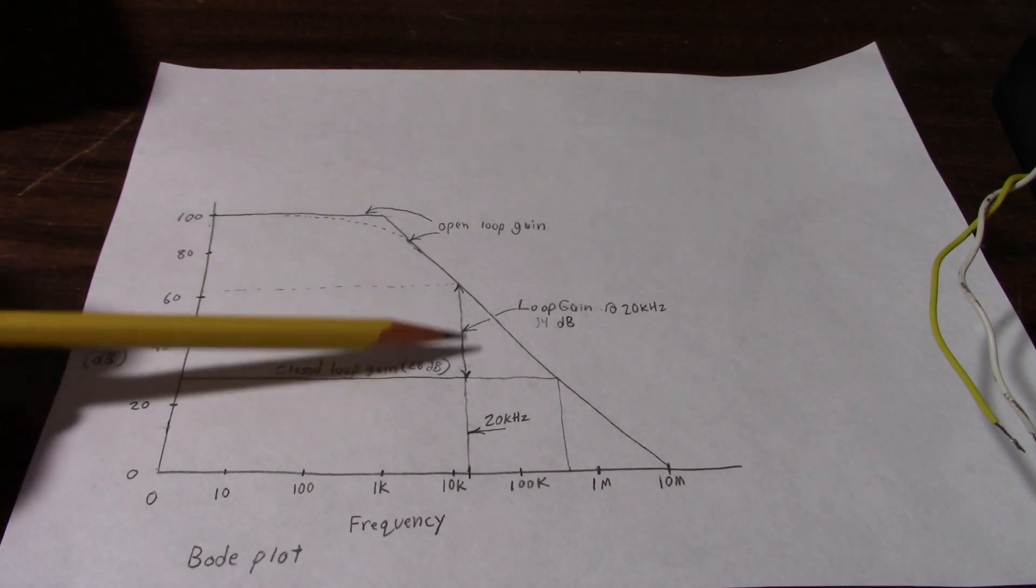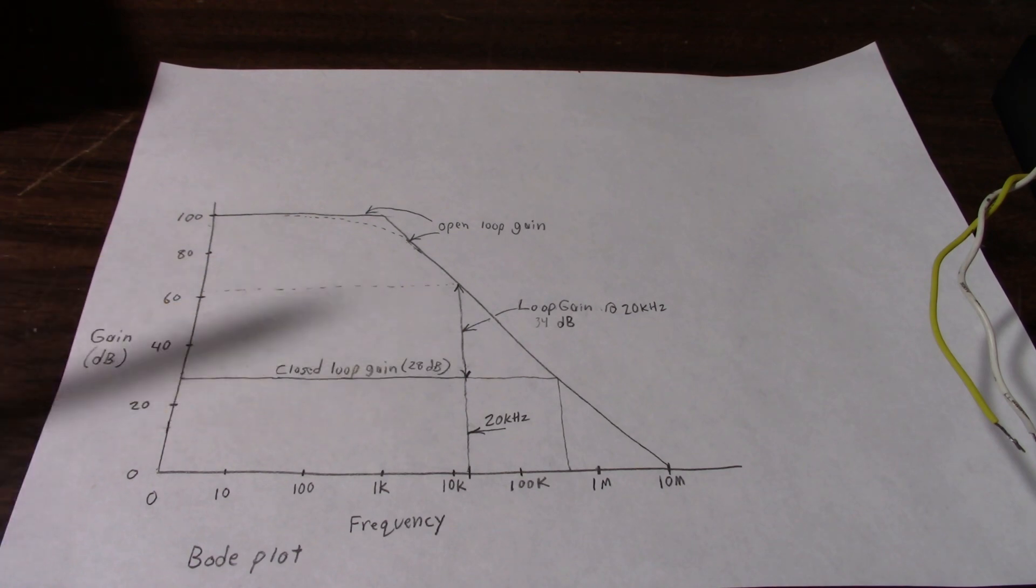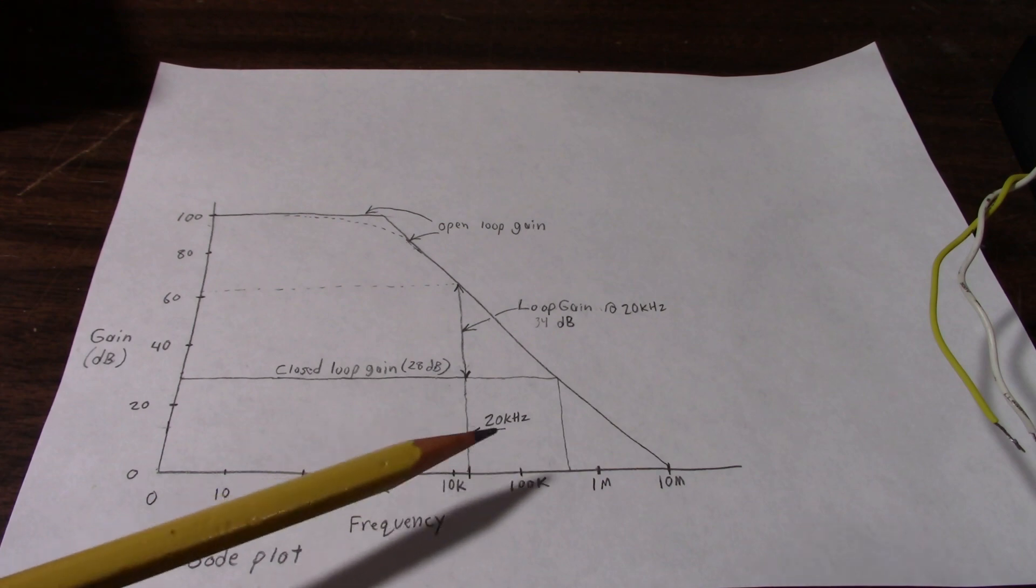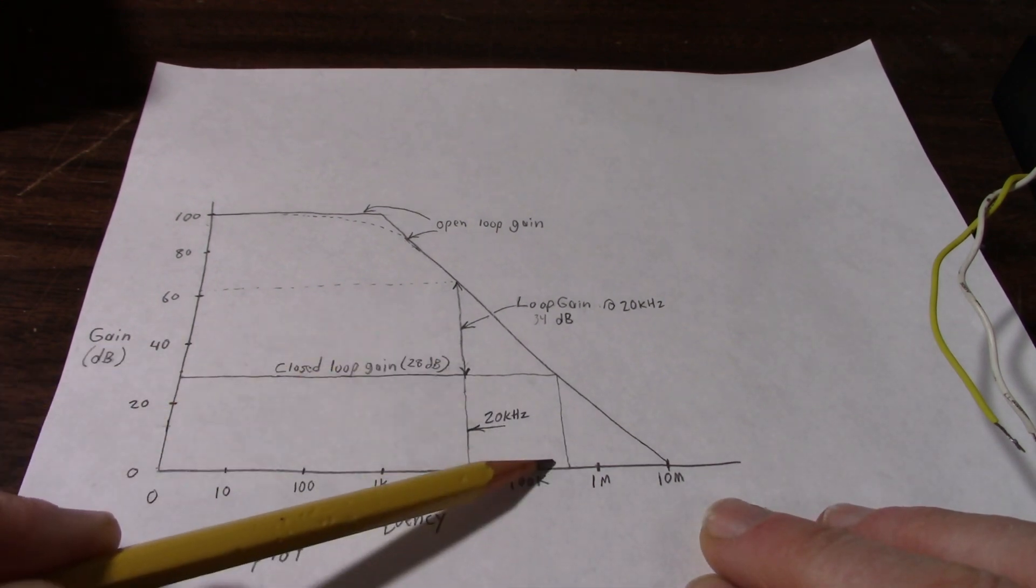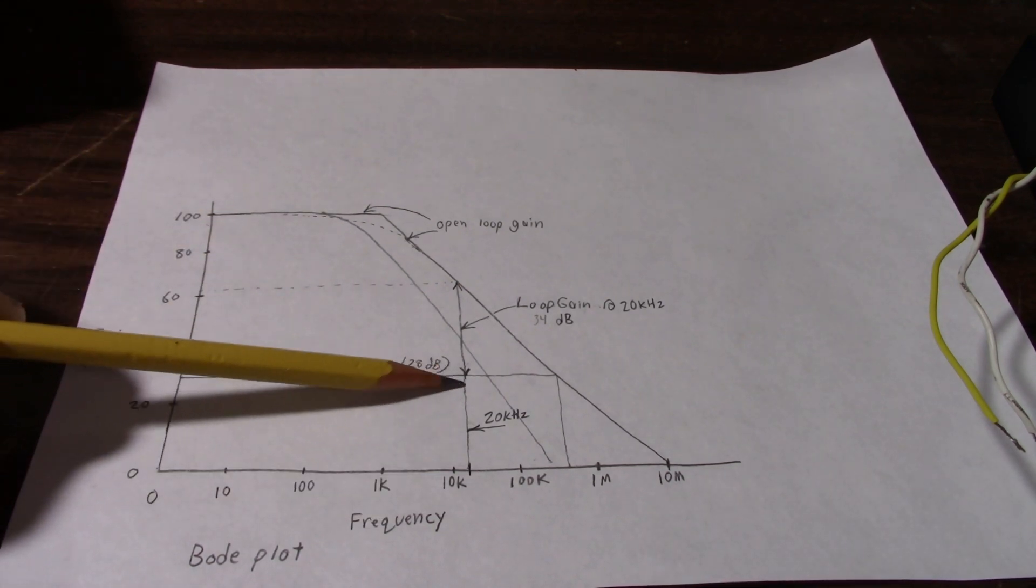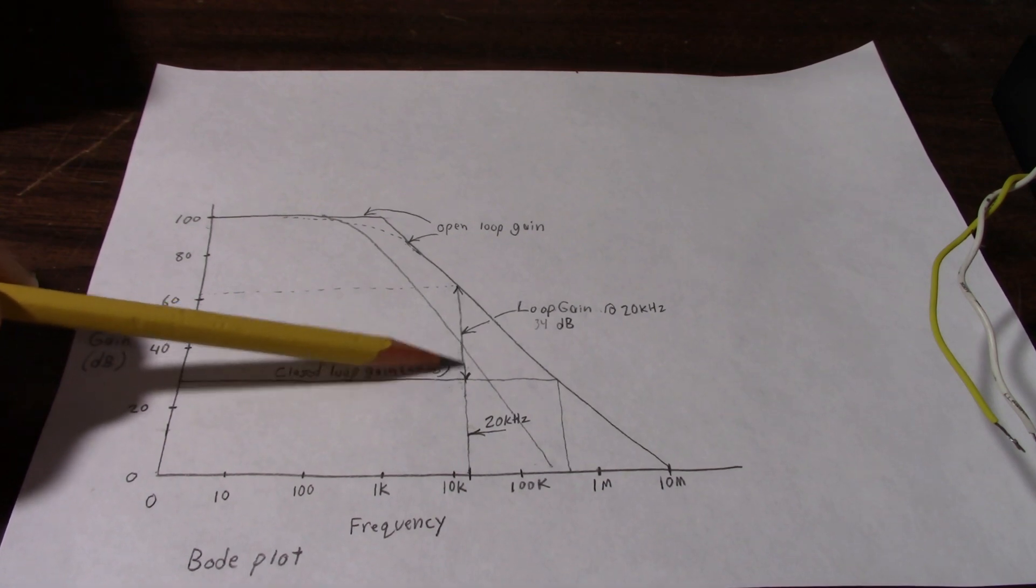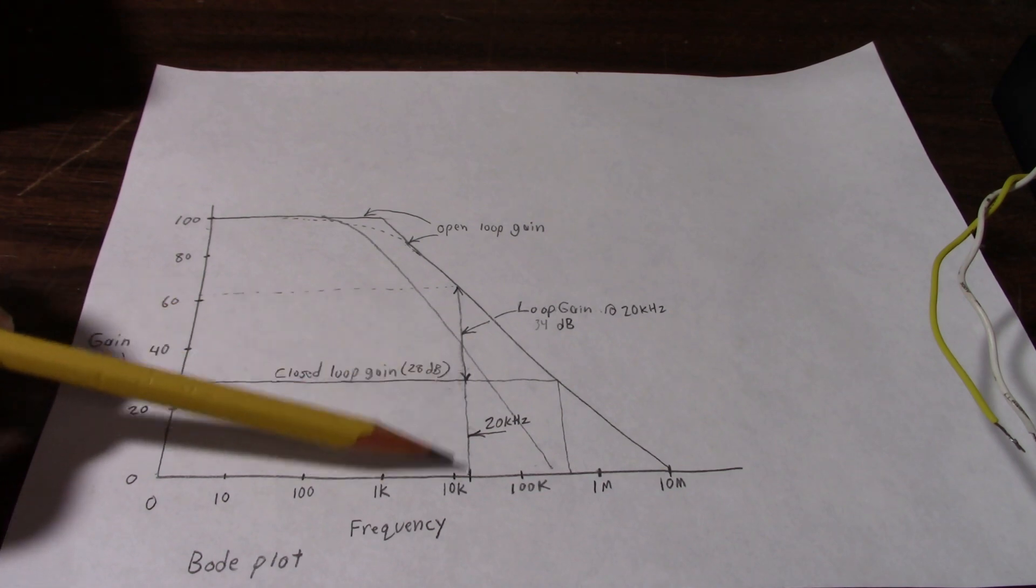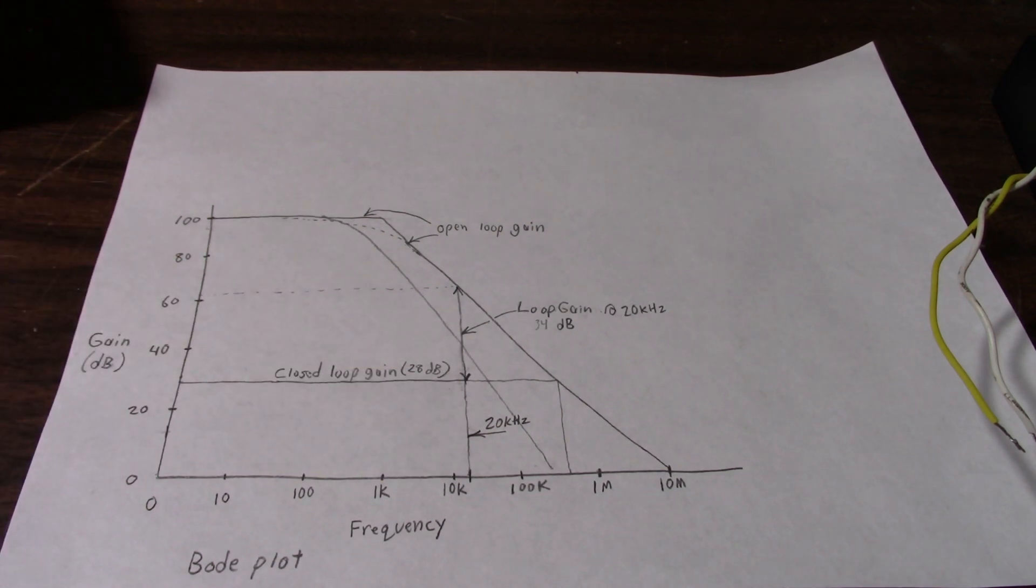So negative feedback doesn't have as much loop gain to work with in order to correct for nonlinearities. So let's say we made an amplifier that had poor open loop gain response. If the line went here like this, well you can see at 20 kilohertz, there's almost no working margin here. There's very little loop gain. So negative feedback would not be able to correct for distortions at 20 kilohertz. And that wouldn't look too good on the spec sheet if your amplifier had like 1% distortion at higher frequencies, even though it did much better at lower frequencies.